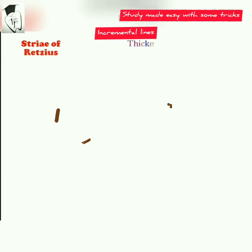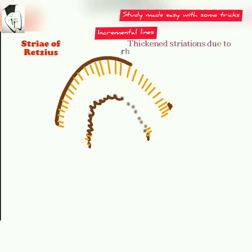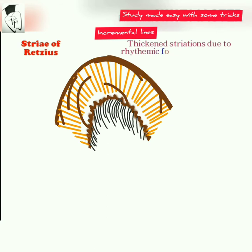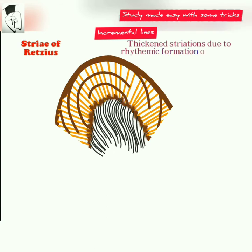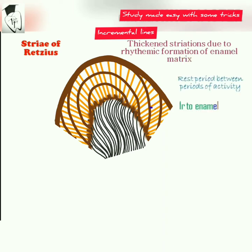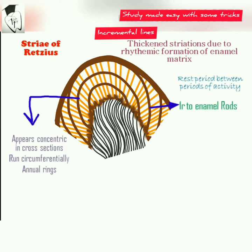First, we'll learn about the Stria of Retzius. These are thickened striations due to rhythmic formation of the enamel matrix. They denote rest periods between periods of activity and appear concentric in cross-sections, running circumferentially like annual rings. They lie perpendicular to the enamel rods. Complete striations course around the tooth, while incomplete striations course from the dentino-enamel junction to the enamel surface and are oblique.